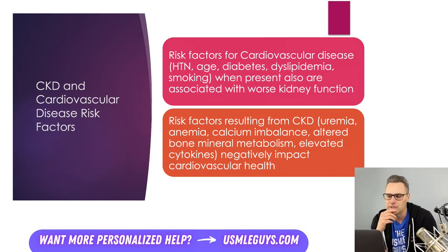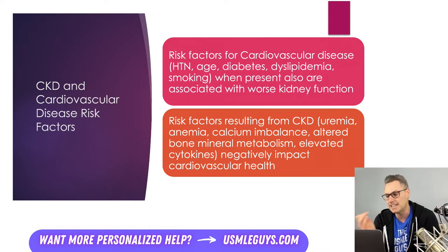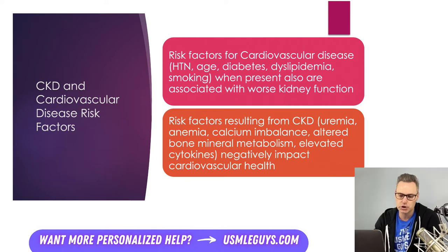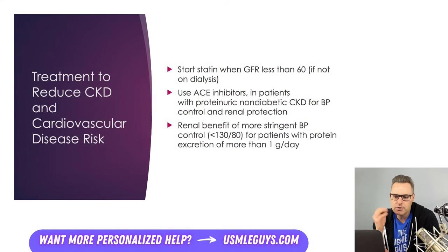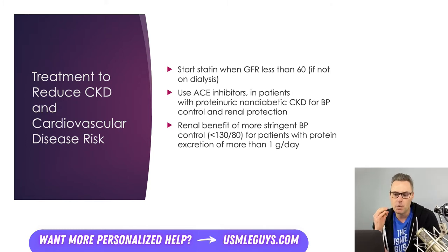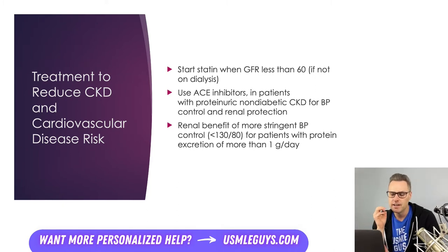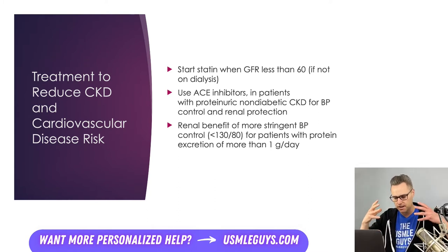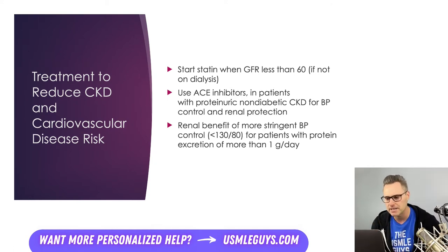Here's a slide showing the risk factors for cardiovascular disease that, when present, are associated with worsened kidney function, as well as CKD findings that will negatively impact cardiovascular health. A statin is used when GFR is less than 60 if the patient isn't on dialysis. When proteinuria starts, we're going to start them on an ACE inhibitor. If they're coughing with an ACE inhibitor, switch them to an ARB — that's a high-yield point you'll likely see on this exam as well.